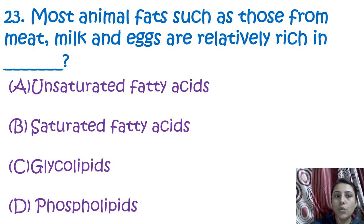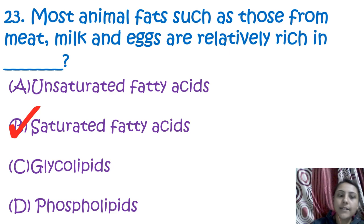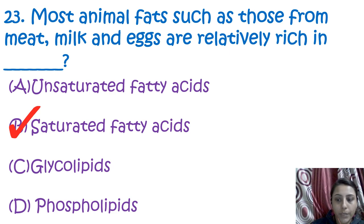The next question is: most animal fats such as those from meat, milk, and eggs are relatively rich in saturated fatty acids. Unsaturated fatty acids are generally obtained from other sources like vegetable oils. Saturated fatty acids are solid at room temperature, while unsaturated fatty acids are liquid at room temperature.